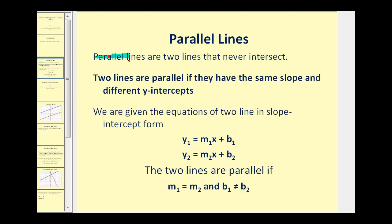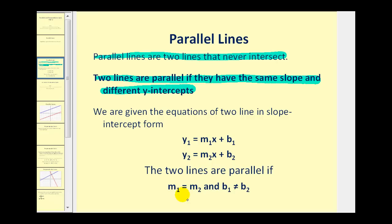Parallel lines are two lines that never intersect. In order for that to happen, the two lines must have the same slope and different intercepts — so the slopes must be the same and the y-intercepts must be different.